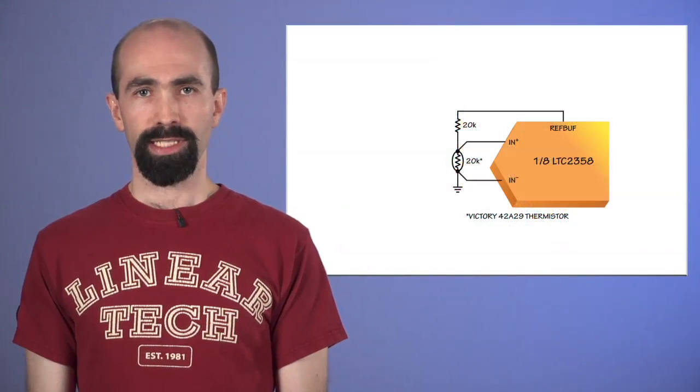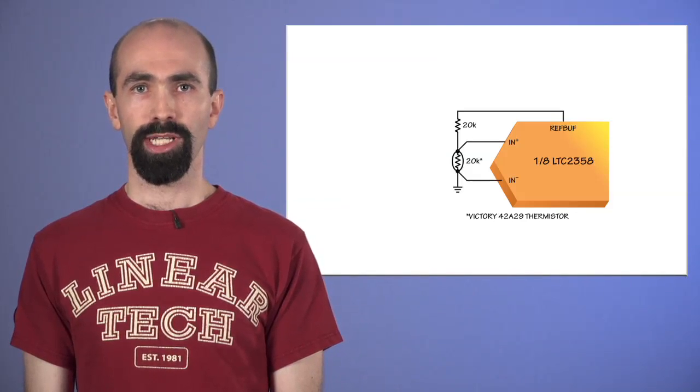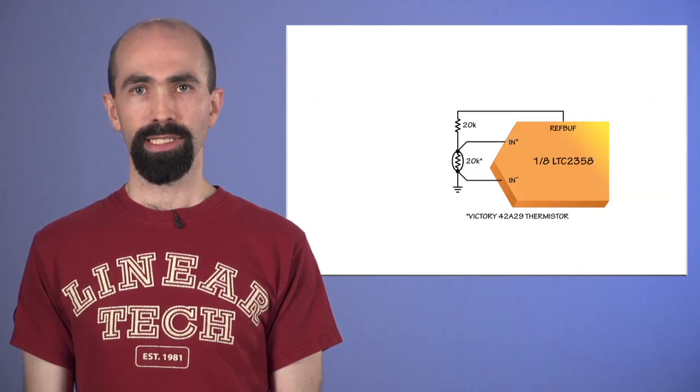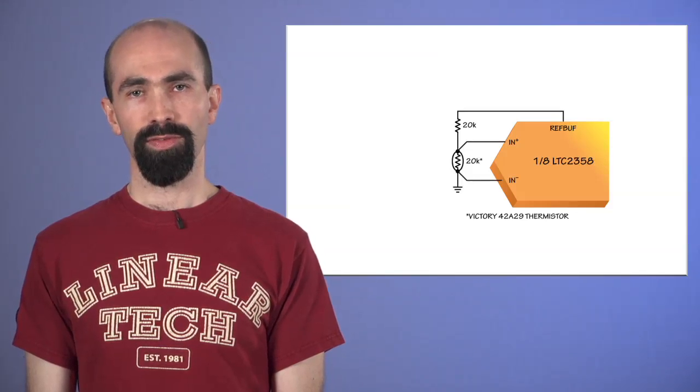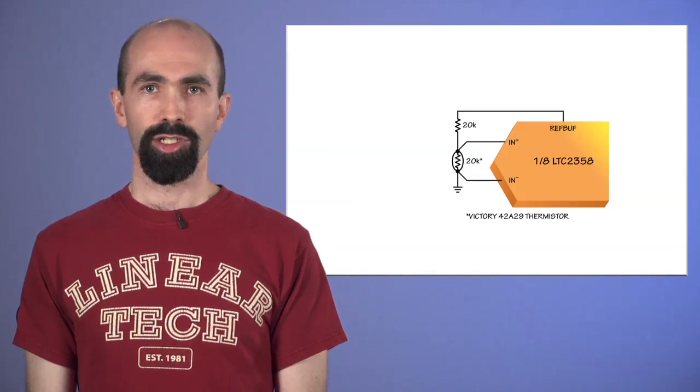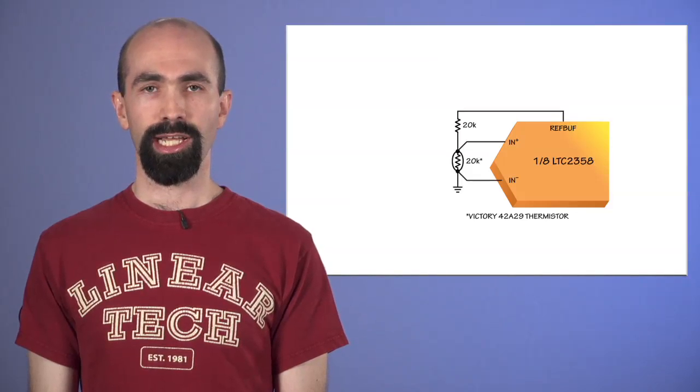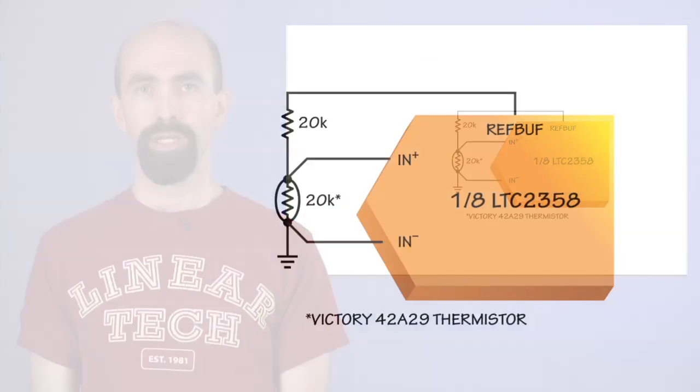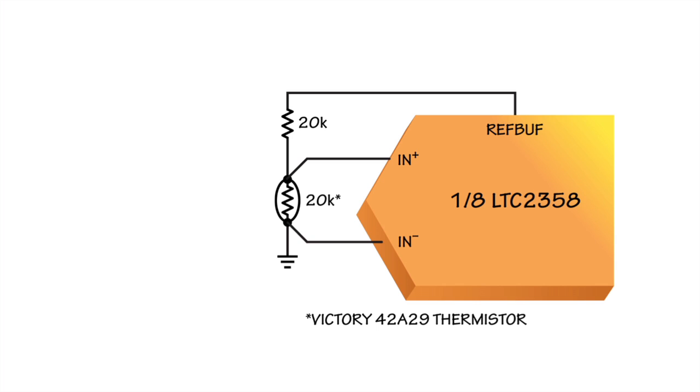One example of such a direct sensor connection is the simple thermistor circuit shown here, which produces a voltage at the ADC related to the ratio of the thermistor to the fixed resistor above. Notice that connecting the top of the resistor to the ADC reference ensures an accurate ratio even if the reference drifts. When selecting a thermistor, low resistance values result in greater power dissipation in the thermistor, which can compromise measurement accuracy. On the other hand, accuracy with a high resistance thermistor requires very high input impedance measurement. Here, the purely capacitive input of the LTC-2358 shines, allowing good accuracy with a 20 kilohm element.